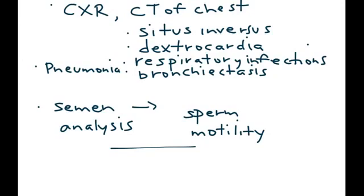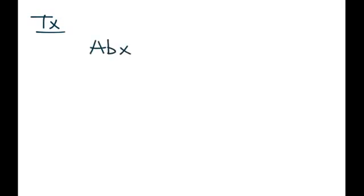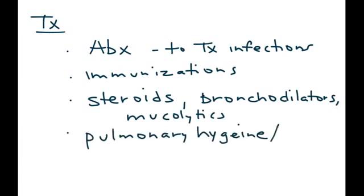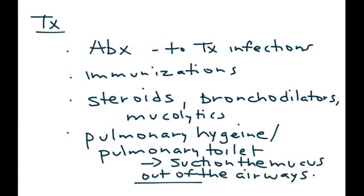There is no actual cure, so management of Kartagener Syndrome involves treating each individual pathology and infection. Lung infections are treated with antibiotics, and immunizations are given to prevent infections from occurring. Each individual infection is treated with its own medications such as steroids or bronchodilators. Pulmonary hygiene, also called pulmonary toilet, involves suctioning the mucus out of the airways. The emphasis is really on minimizing complications.